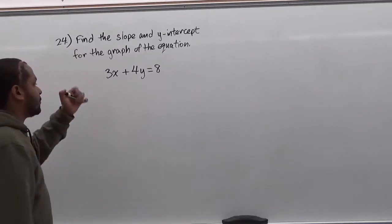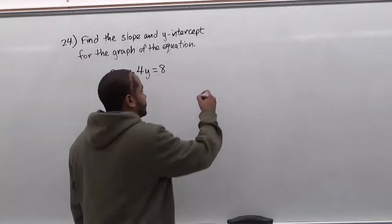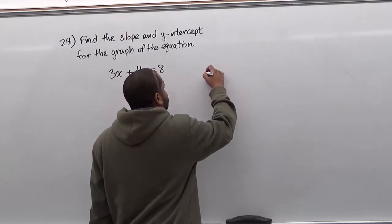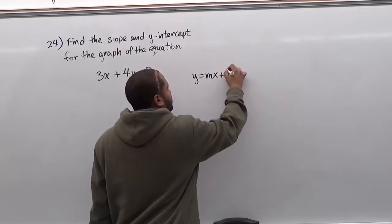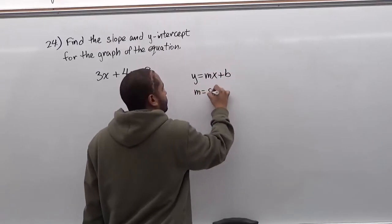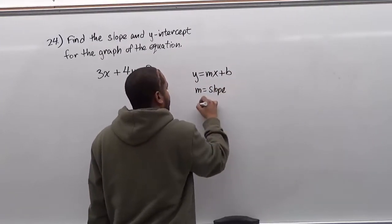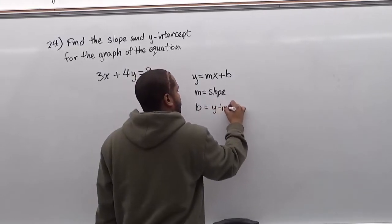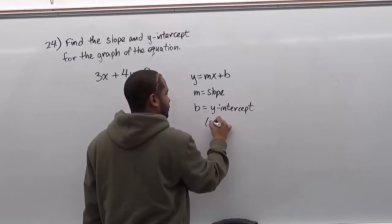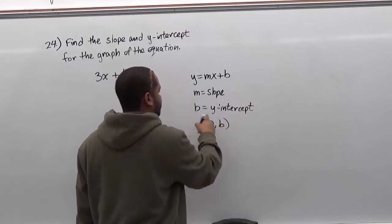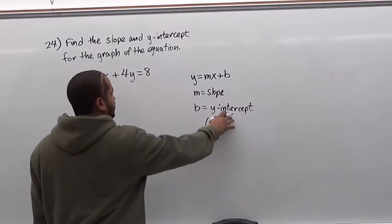Now to get the slope and the y-intercept, we know that we can refer to the formula which has the slope and intercept, which is y equals mx plus b, where m equals the slope and b equals the y-intercept, which we notarize as (0, b) for the value of b. So this would be the coordinate of the y-intercept.